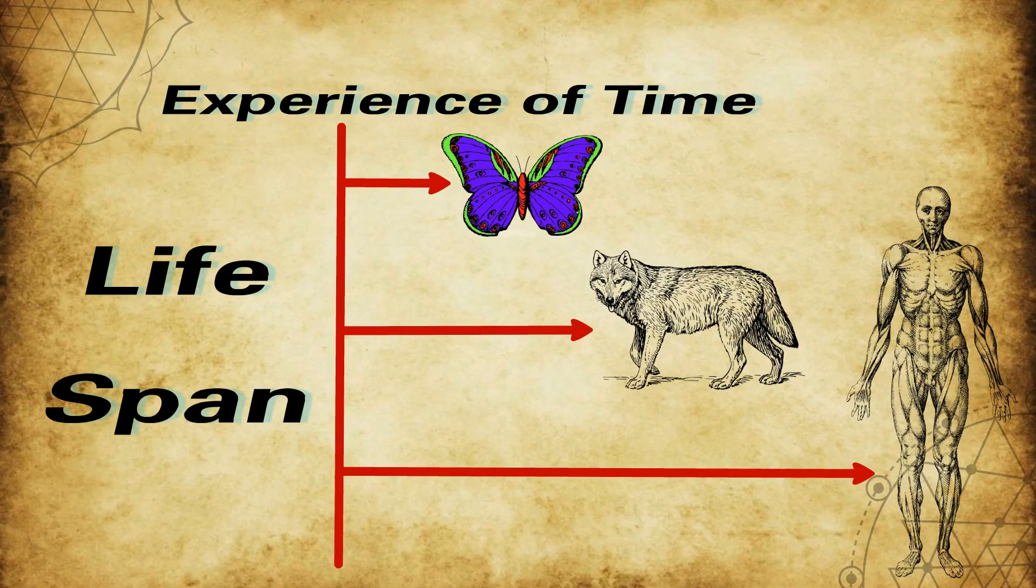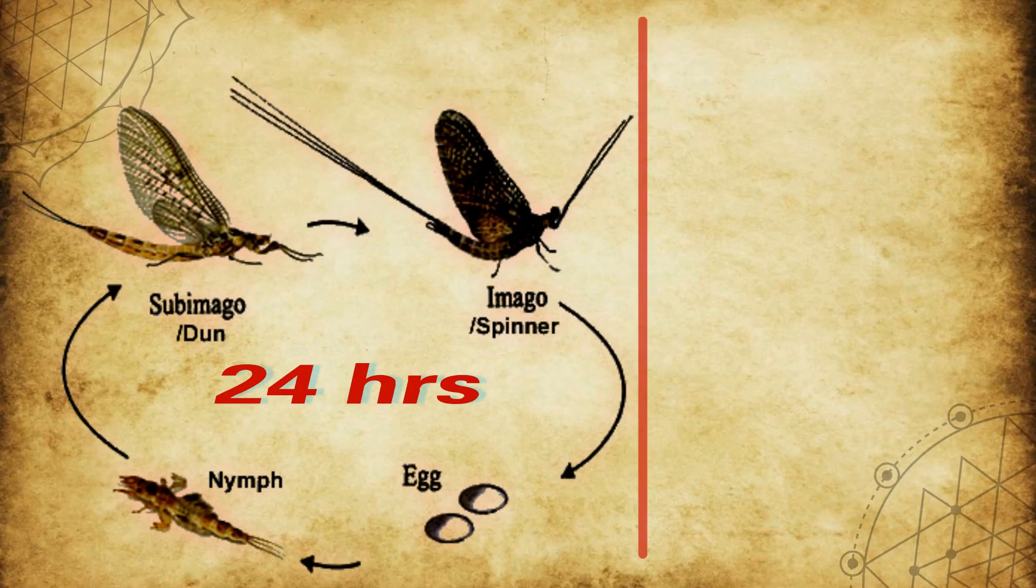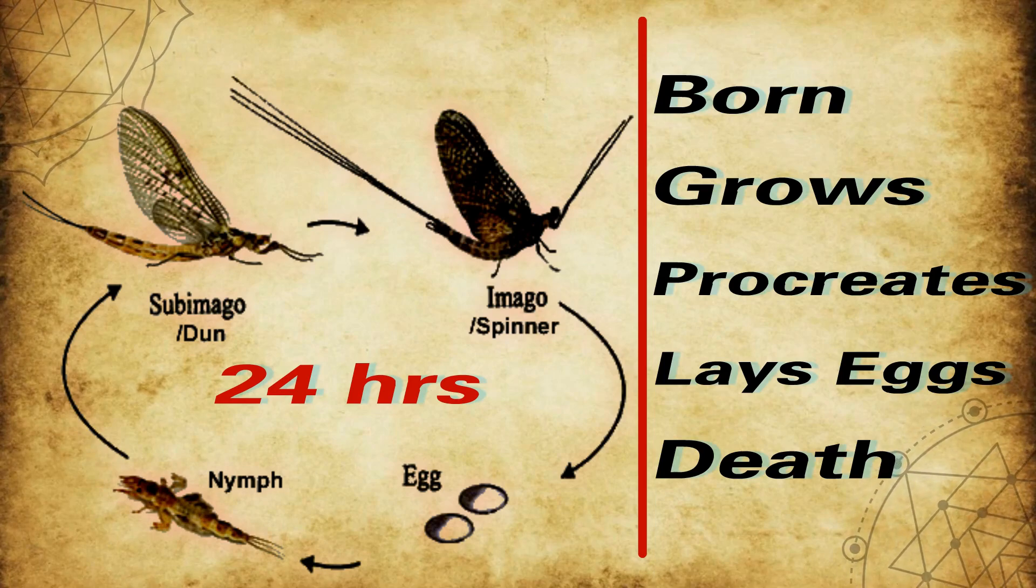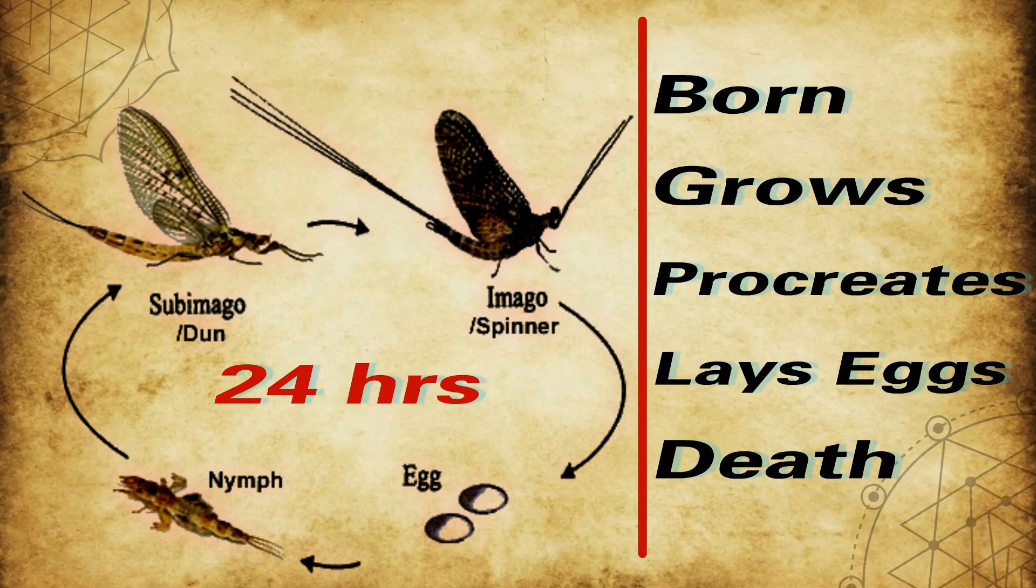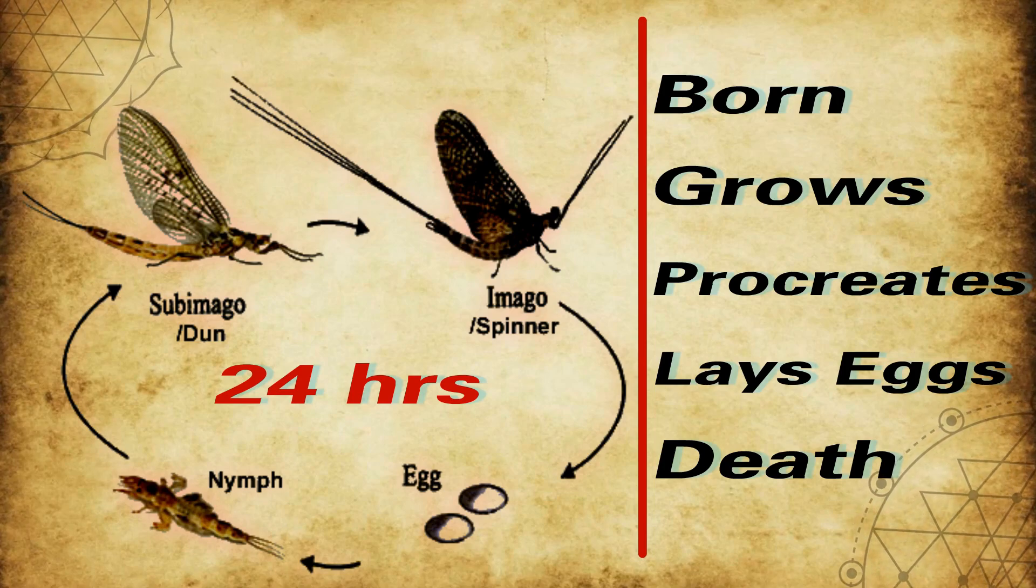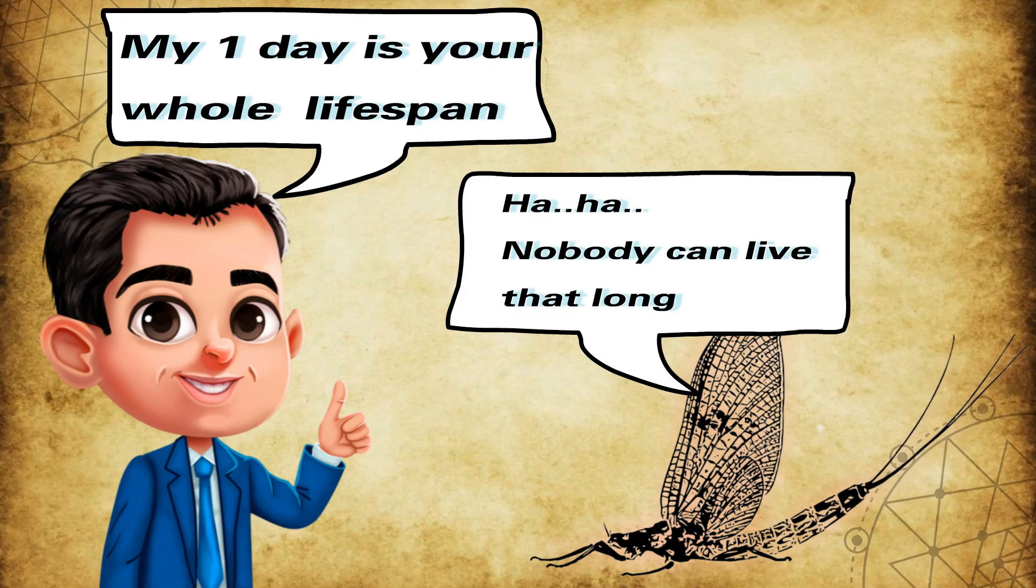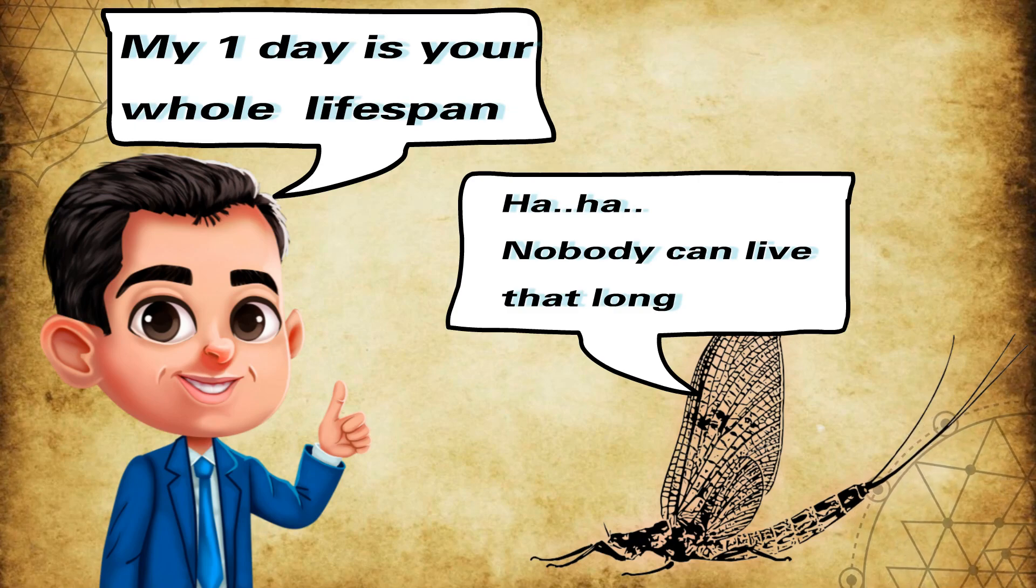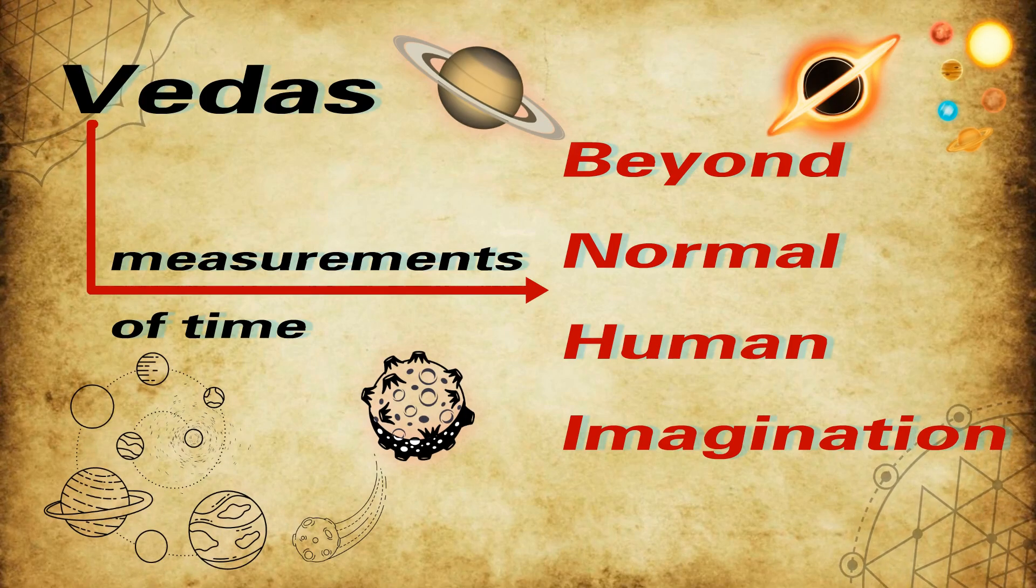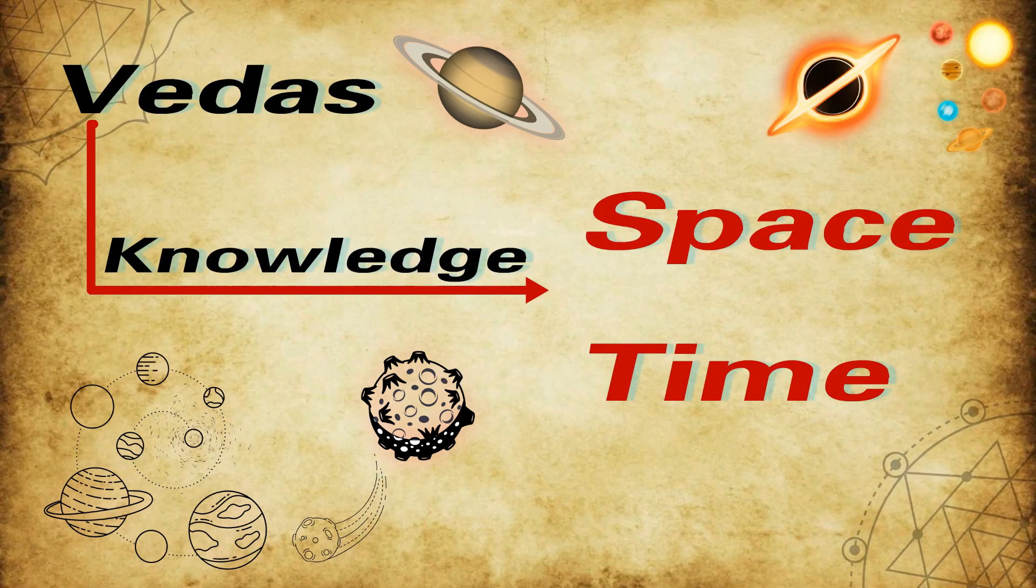Now, on the other hand, experience of time is different based on life span. Consider this example of an insect. An insect born at night, and within the same night it grows, procreates, lays eggs, and grows old. The next morning you can find it dead under a streetlight. If you tell an insect that its entire life span was equal to one night of a human, that will be unbelievable for the insect. Similarly, the measurement of time given in Vedas are beyond normal human imagination. Now you know how Vedas can give you knowledge about space and time.